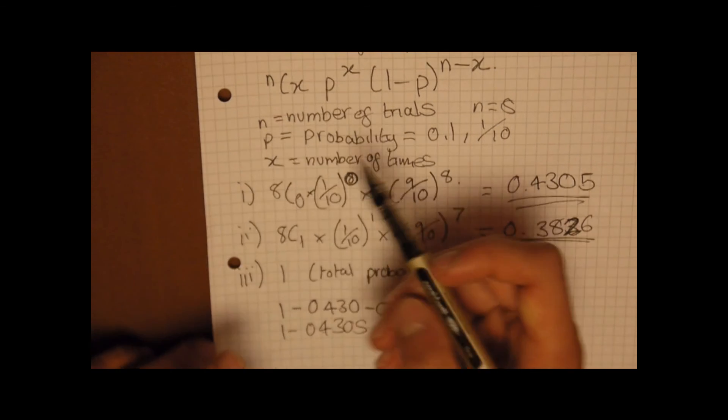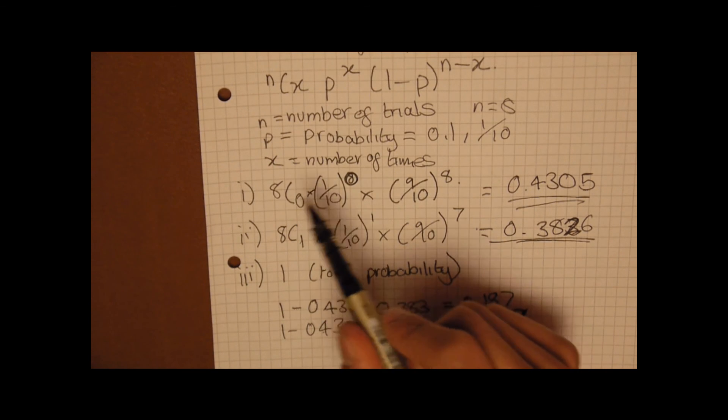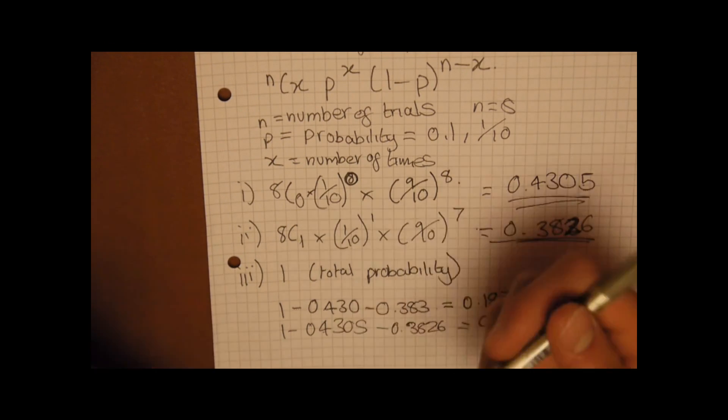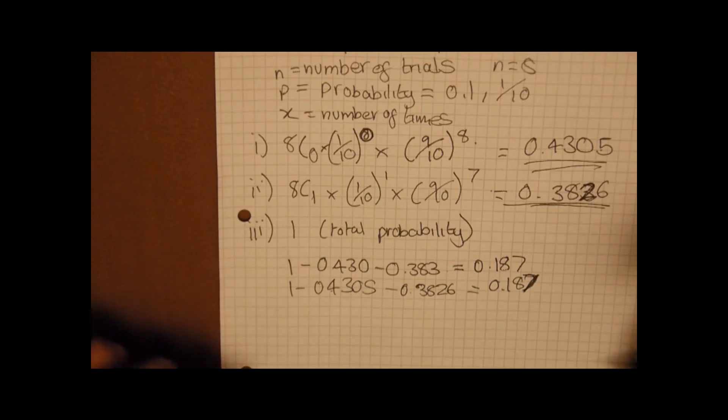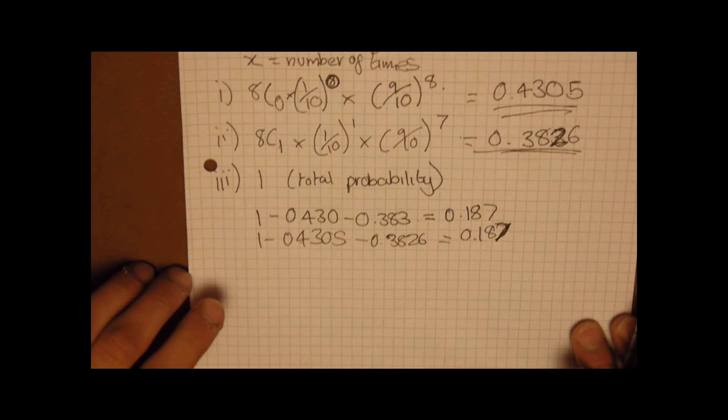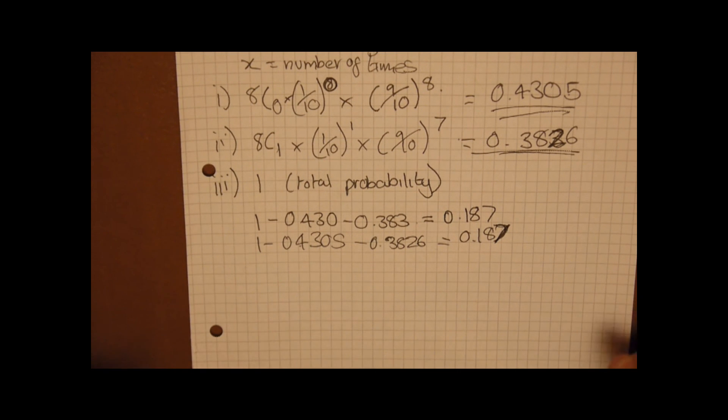And then you've put the numbers into the formula, and then you've timed them all together to get your answers. And remember, if you're looking for at least 2 of something, provided you've worked out all the options below that, you should be able to just minus them from 1 to get your answer. Thank you very much for listening.